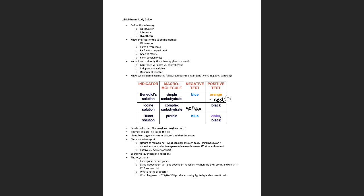Familiarize yourself with that table and what the colors indicate, because you may see a couple of questions about that on the exam. Another thing to address is the difference between a positive and a negative control. A positive control always gives a positive result — that's why it's called a positive control. So if asked what to use as a positive control for Benedict's reagent, you would use something like glucose, a simple carbohydrate. For the iodine test, you would use starch as a positive control because it's always going to give a positive result.